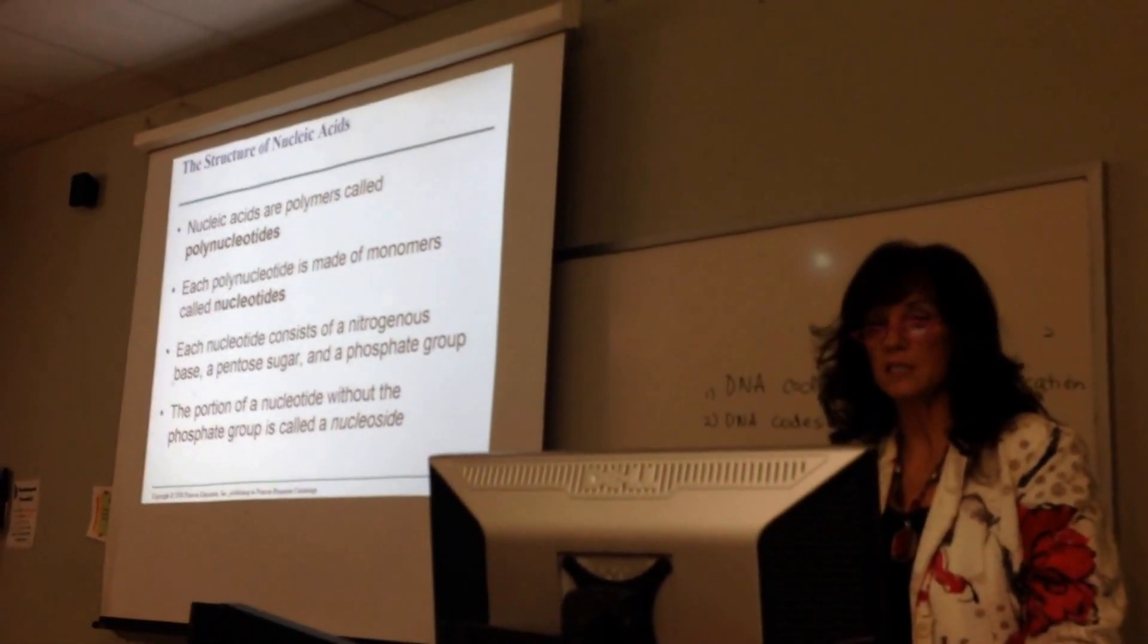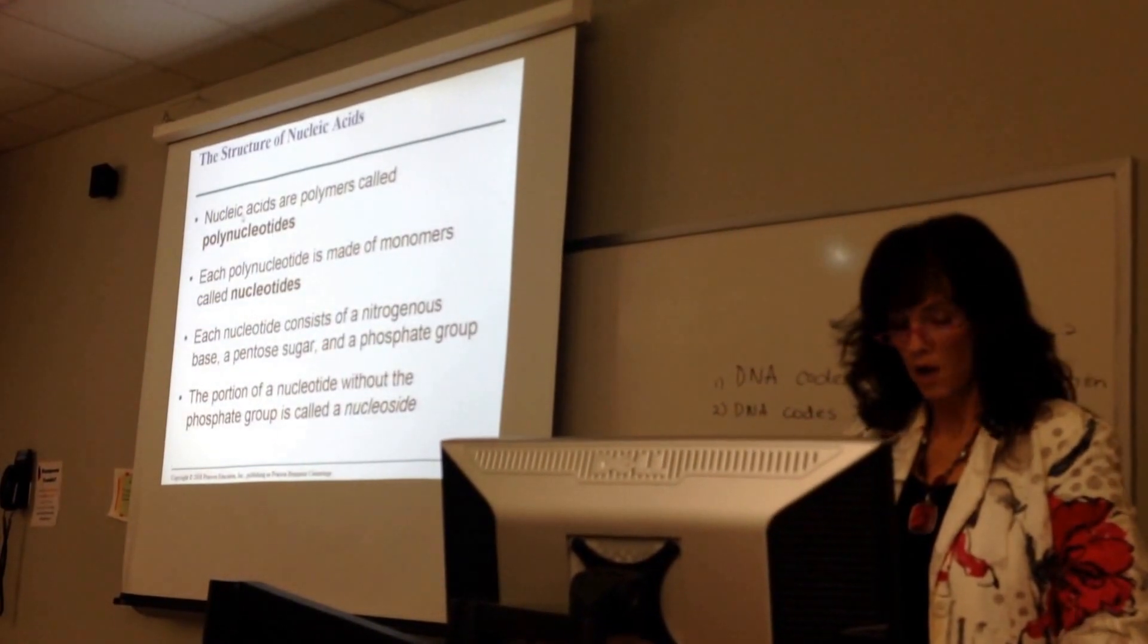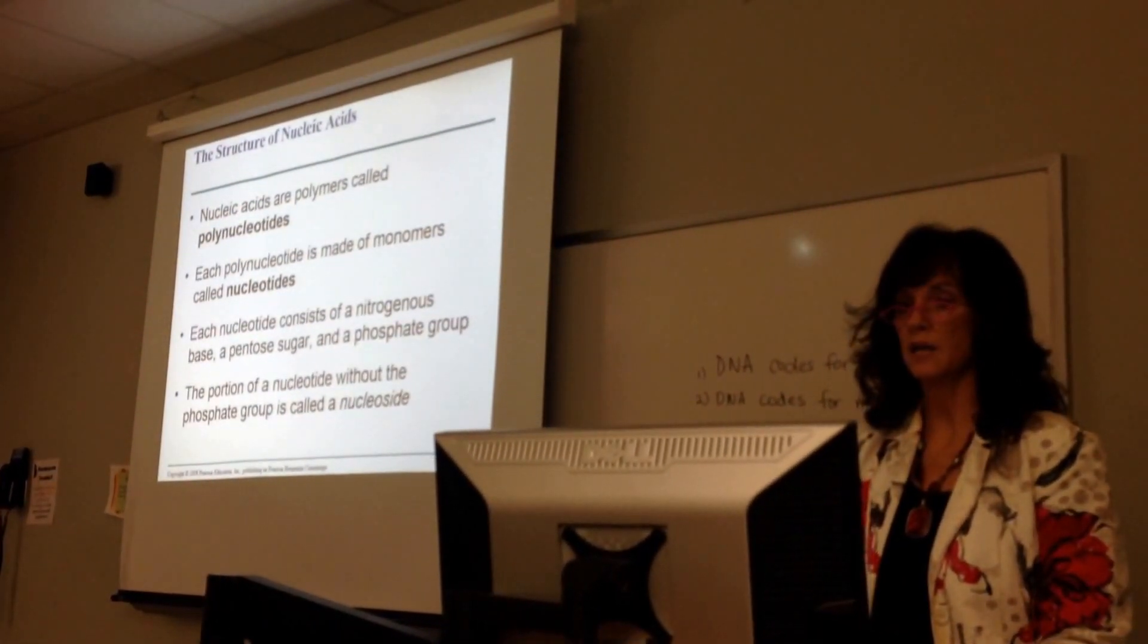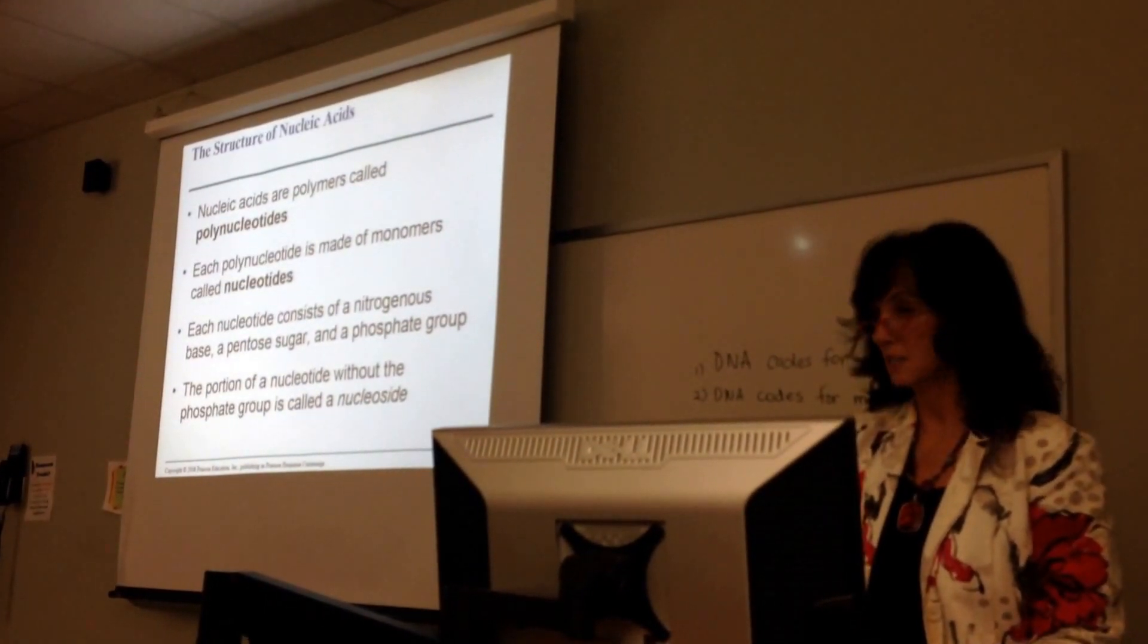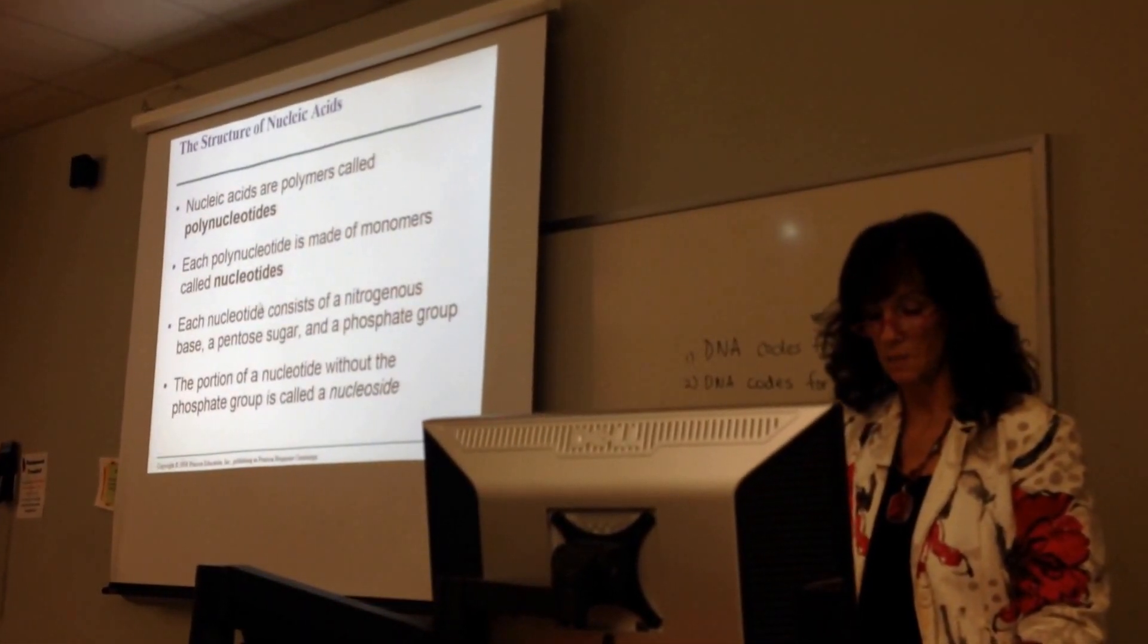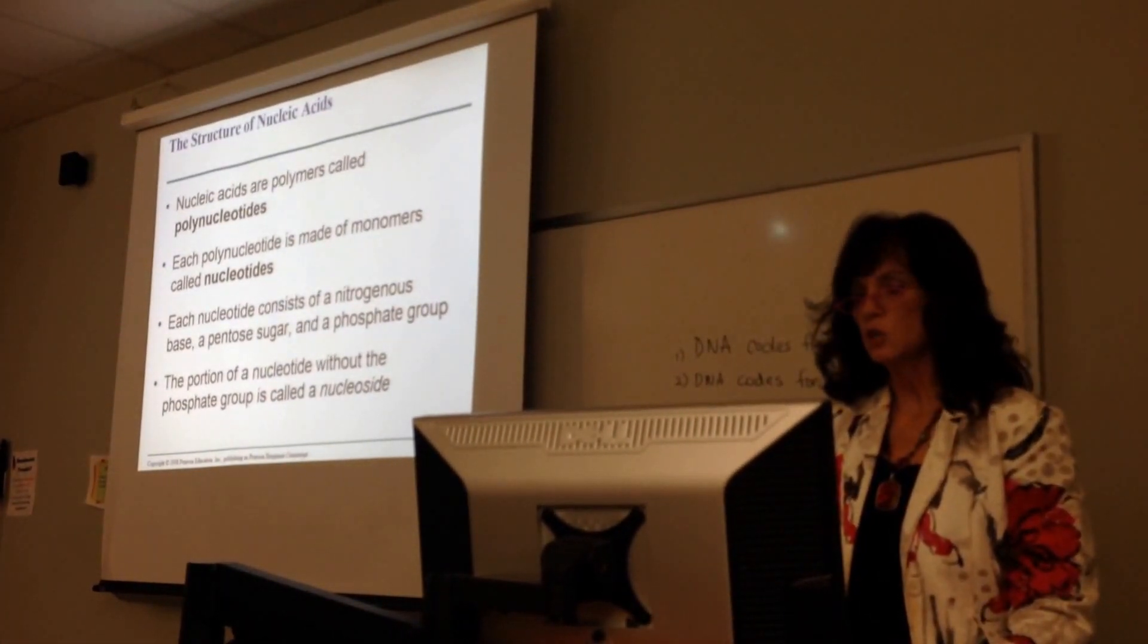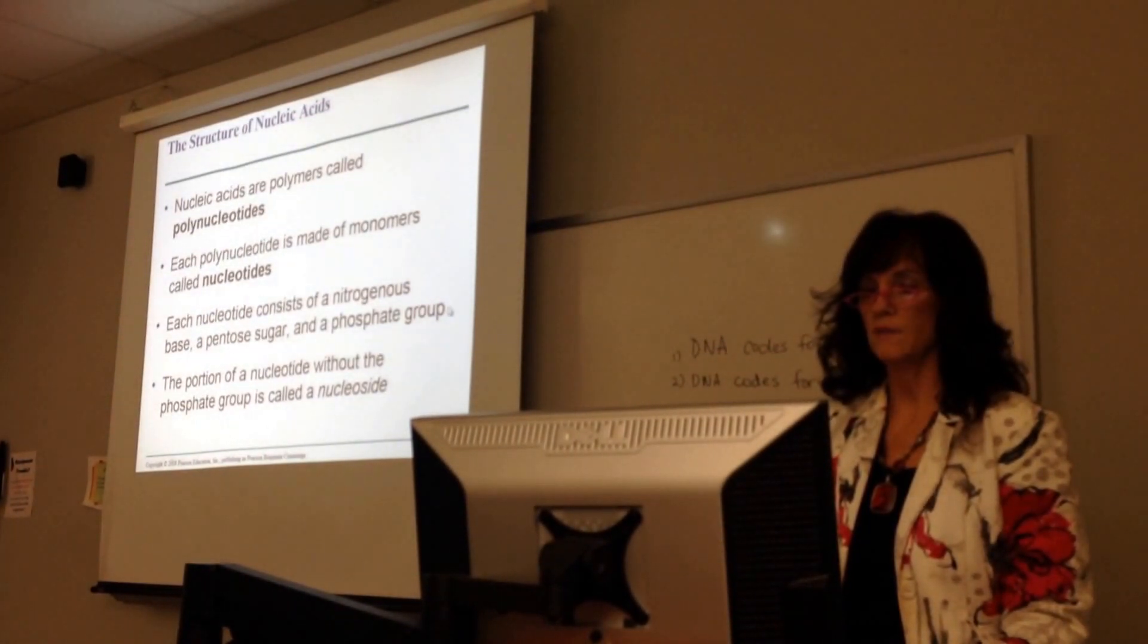The next thing is polynucleotides, which means many nucleotides. Are polymers consisting of monomers, each called a nucleotide. So nucleic acids, monomers would be polynucleotides or nucleotides. The monomers would actually be nucleotides. Each nucleotide has a nitrogenous base, a pentose sugar, and a phosphate group.